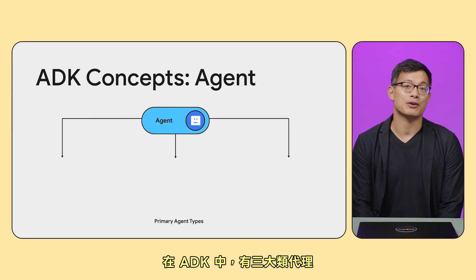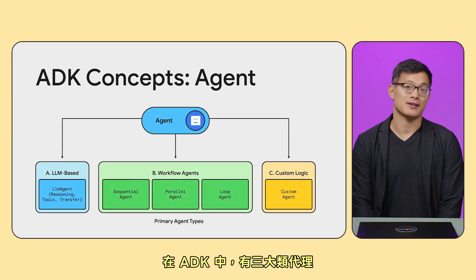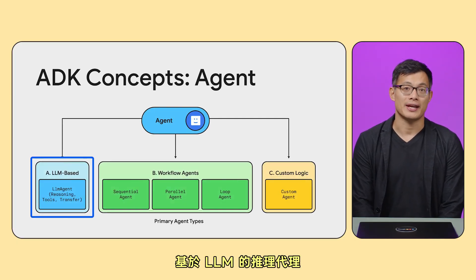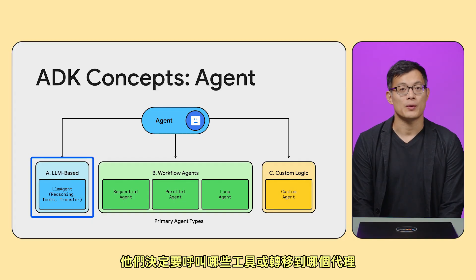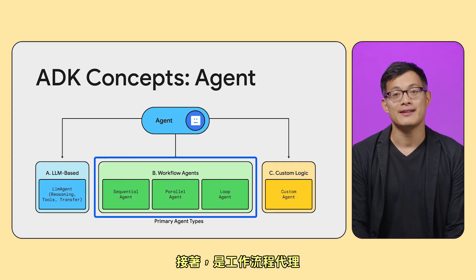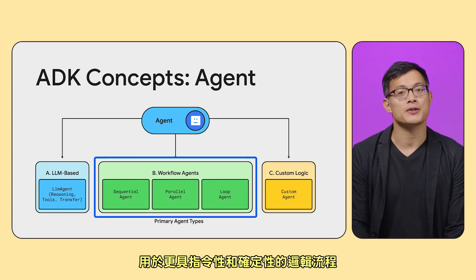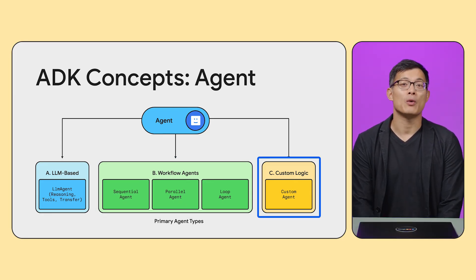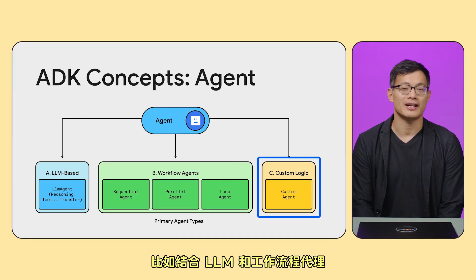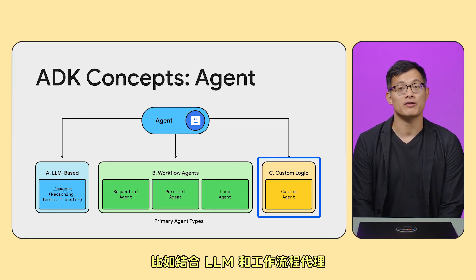In ADK, there are three main categories of agents. LLM-based reasoning agents — they decide which tools to call or which agents to transfer to. Then there are workflow agents, for more prescriptive and deterministic logic flows. Finally, you can also build custom agents where you can write arbitrary logic, like combining both LLM and workflow agents.